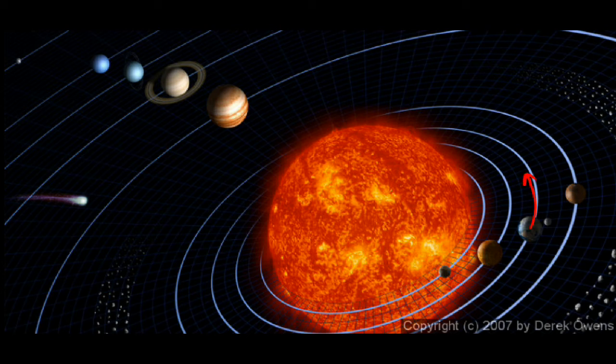To answer the question how fast are you moving right now: relative to the floor, you're probably sitting still. Relative to the center of the earth, you might be moving at hundreds or maybe even a thousand miles per hour. Relative to the Sun, you're moving at over 18 miles per second. And the Sun is not still either—the Sun is going around the center of the galaxy.